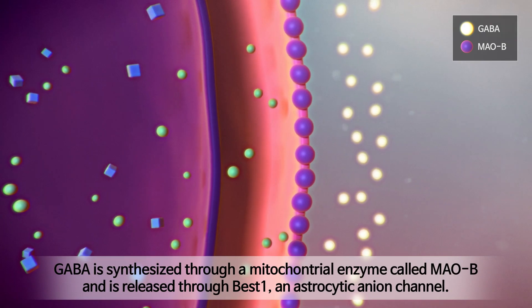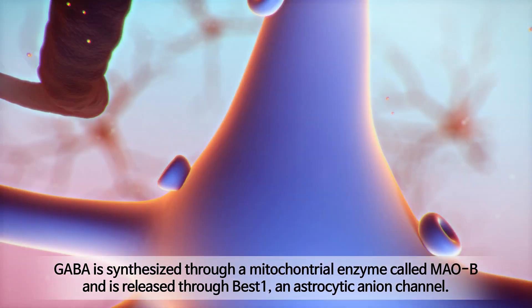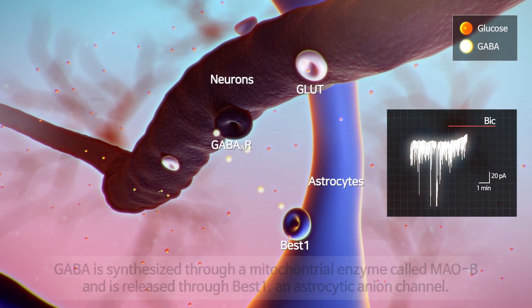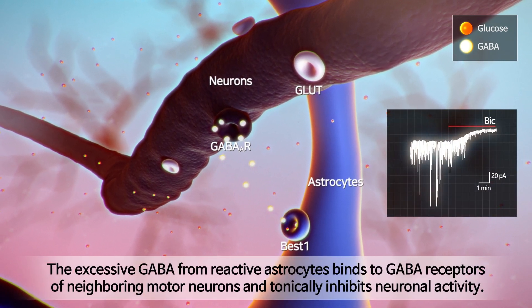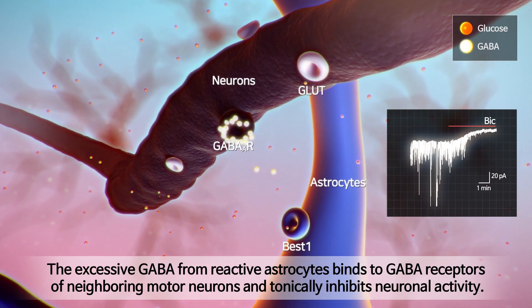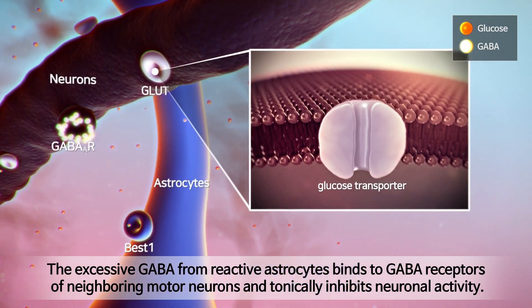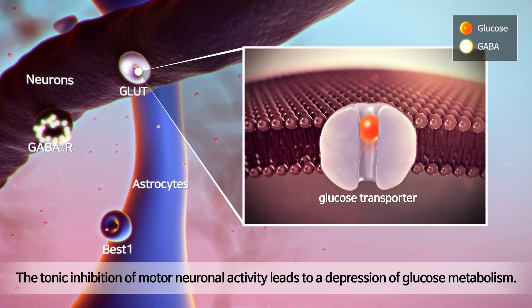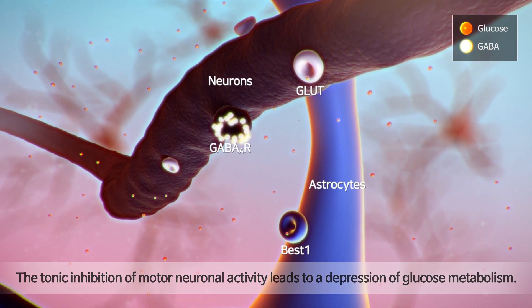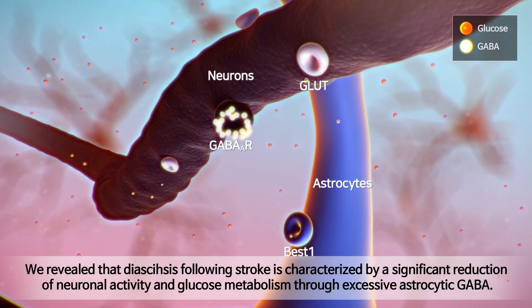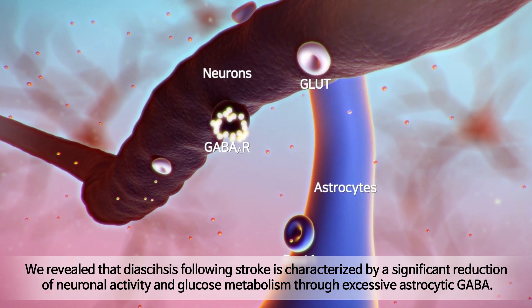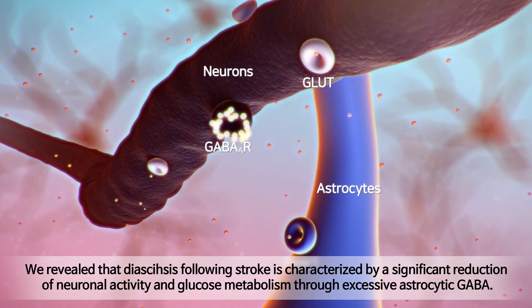GABA is synthesized through a mitochondrial enzyme called MAO-B and is released through VRAC, an astrocytic anion channel. The excessive GABA from reactive astrocytes binds to GABA receptors of neighboring motor neurons and tonically inhibits neuronal activity. The tonic inhibition of motor neuronal activity leads to a depression of glucose metabolism. Thus, diaschisis following stroke is characterized by a significant reduction of neuronal activity and glucose metabolism through excessive astrocytic GABA.